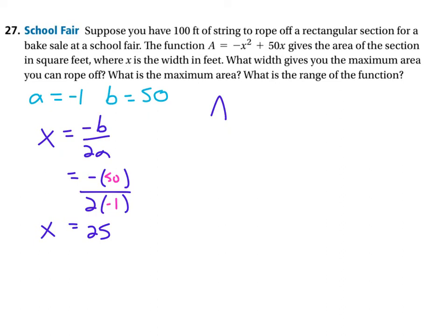and let's write that equation. A equals negative x squared plus 50x. And they said that x, we should be using 25 squared plus 50 times 25 will give us the maximum area.